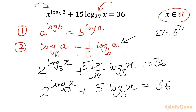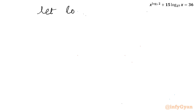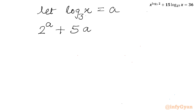Now I can use substitution, as we have log x base 3 appearing at two places. Let log x with base 3 equal to a. So our equation becomes 2 power a plus 5a equal to 36.